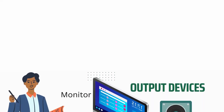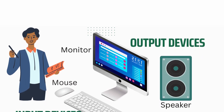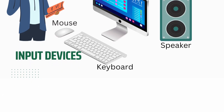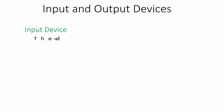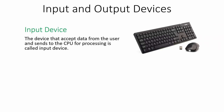Hello everyone. In this video I will explain about different input and output devices of our computer system. The devices that accept the data from the user and send to the CPU for further processing are known as input devices. For example, the keyboard and mouse.